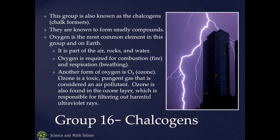Another form of oxygen is ozone — a toxic, pungent gas considered an air pollutant. It's formed in the low atmosphere by electric discharges like a lightning bolt. It's formed in the upper atmosphere by cosmic radiation hitting O2 molecules, causing them to form ozone, creating a protective layer that protects us from UV rays.